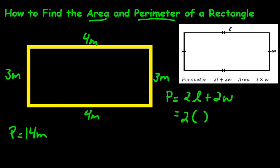So I'll put it right in there, and then plus 2 times the width. And the width in this case is 3, so instead of w I put a 3 there. And then we just have to multiply: 2 times 4 is 8, and plus 2 times 3 is 6, and we get an answer of 14. And that's in meters in this case.